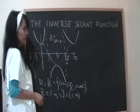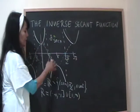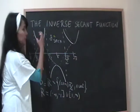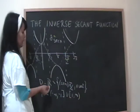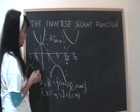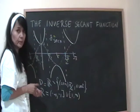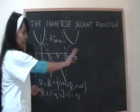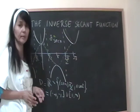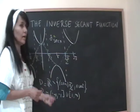We want to invert the function, but it's not one-to-one, so we need to restrict the domain while still capturing all of the range — from one to infinity as well as from negative infinity to negative one. Some books do this differently, but we'll choose the restriction in a way that's similar to what we did for the cosine function.